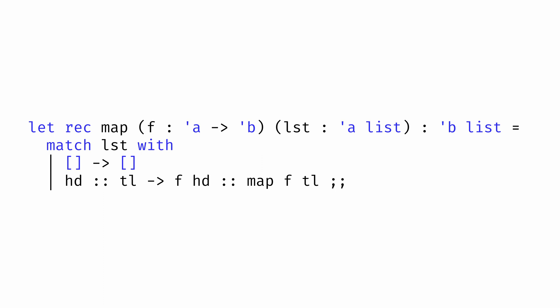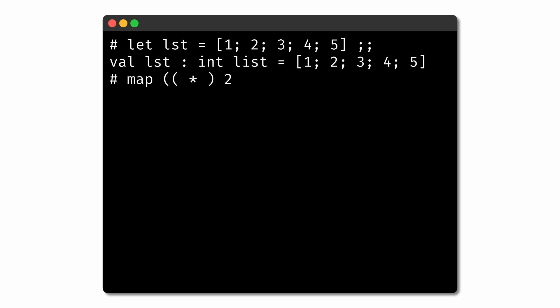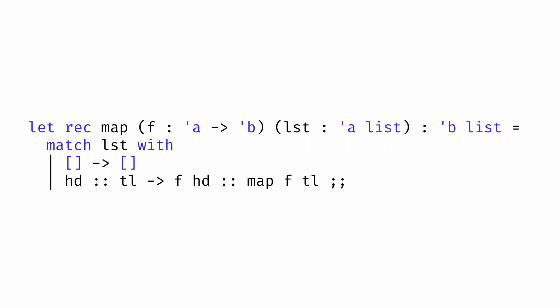But importantly, when we evaluate the map function on a list, we get a new list as a result. The original list is still there, unchanged. The map function built that new list using the cons operator, which necessarily required taking up some additional space.